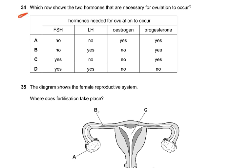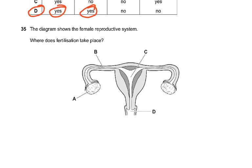Question number 34: which row shows the two hormones necessary for ovulation to occur? It has to be FSH and LH. Estrogen is required for the lining of the uterus; progesterone maintains and makes it more spongy and vascular. That is why the answer is D. Question 35: fertilization takes place in the outer one-third of the oviduct, so the answer is B. C is the uterine cavity, D is the vagina, and A is the ovary.